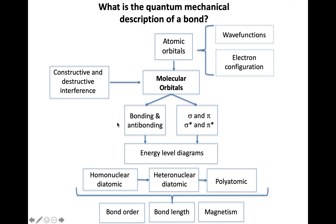We'll describe these molecular orbitals as having characteristics of bonding or — a new idea — anti-bonding. Our notation uses sigma and pi as before, but we also have sigma-star and pi-star, which refer to anti-bonding. We'll consider their energy levels, and the kinds of molecules we'll look at are generally diatomic ones. Properties we'll explore include bond order, bond length, and a new one: magnetism.